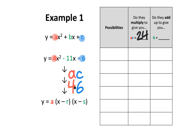Next, let's take a look at B. Well, B is actually negative 11. Let's write that down over here. At this point, we want to find two numbers that multiply to give us positive 24, but the same two numbers must add up to give us negative 11.